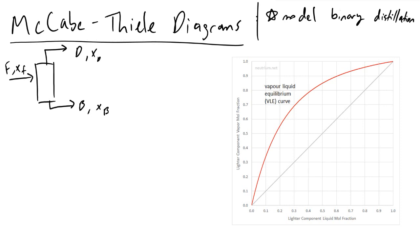The way we make McCabe-Thiele diagrams is by first plotting the line Y equals X — a line with a slope of one and a Y-intercept of zero. In addition to that, we look up tabulated values in thermodynamics reference books to create a vapor-liquid equilibrium curve, which represents the point at which chemical potential equilibrium is realized between a component in the liquid and vapor phase.